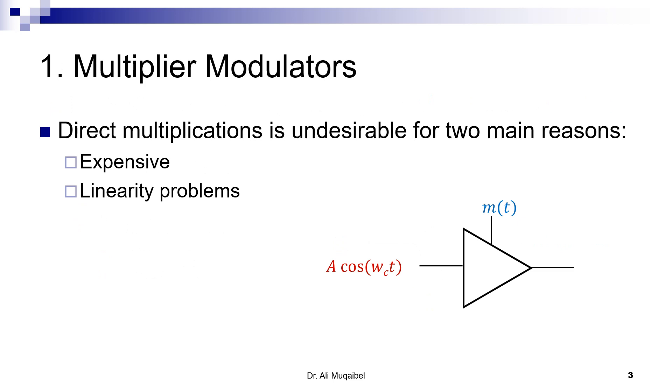We can use direct multiplication which multiplies the signal by the carrier. Basically, you connect the message as the controlling voltage or controlling gain for the amplifier. The signal with constant amplitude will have different gain, and this gain is going to be controlled by the message or signal. This is called direct multiplication.